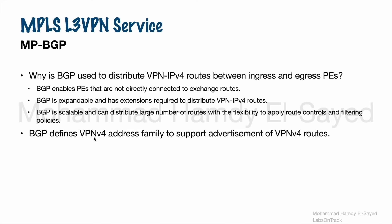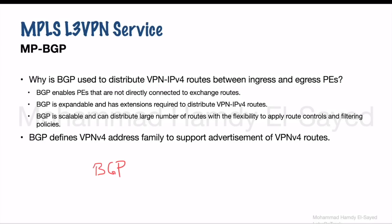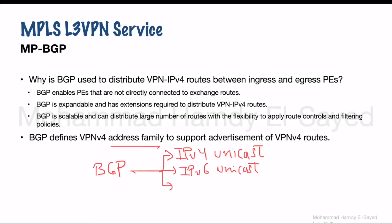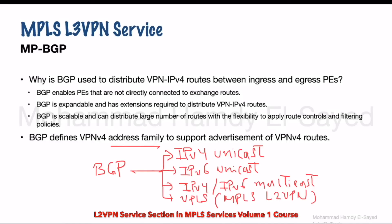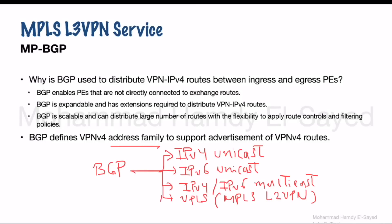BGP defines the VPNv4 address family to support VPN IPv4 routes. BGP defines multiple address families, such as IPv4 Unicast, IPv6 Unicast, IPv4 and IPv6 Multicast, and the VPLS address family. The VPNv4 address family is the one we are focused on — we will define and enable the peers, which are the remote PEs, to which we need to advertise the VPN IPv4 routes.